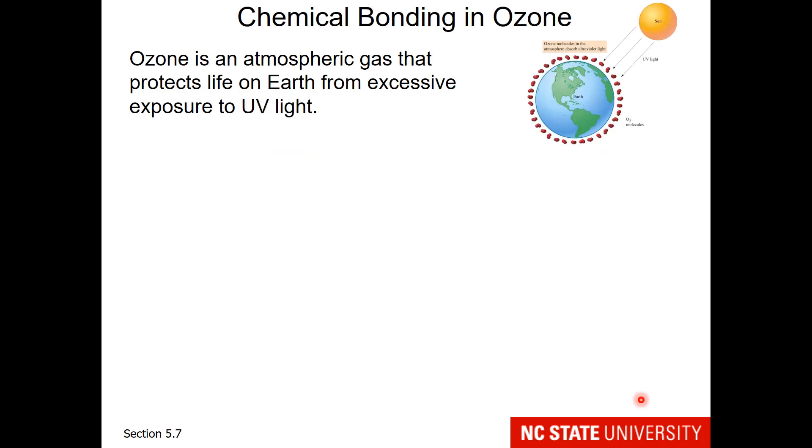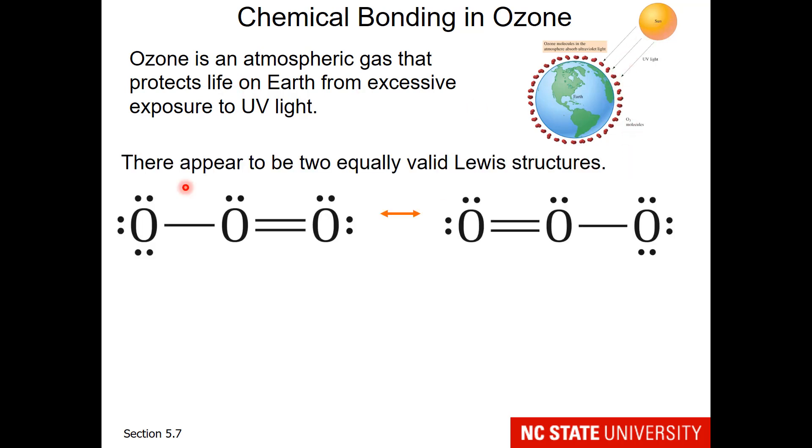So why is knowledge of resonance important and how is it applied? Well, it definitely helps us understand the ozone layer above the earth. Ozone is an atmospheric gas that protects life on earth from exposure to the UV rays of the sun. If one were to draw ozone, there are two equally valid Lewis structures, much like SO2.